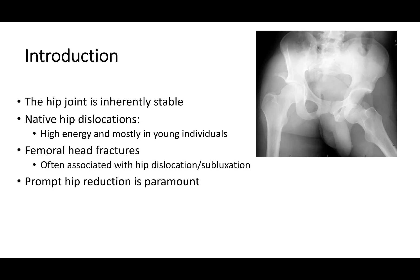The hip joint is inherently stable. It doesn't dislocate with just minor trauma or the degree of trauma that you may get with a shoulder dislocation. The shoulder is afforded more motion at the cost of stability, and the hip is afforded stability at the cost of more motion. Native hip dislocation — meaning not a total hip arthroplasty, but just a joint dislocation of the hip — is usually a higher energy injury, mostly in young individuals. You can get a femoral head fracture as a result of the hip dislocation or maybe with a subluxation, and you really need to get these reduced promptly.